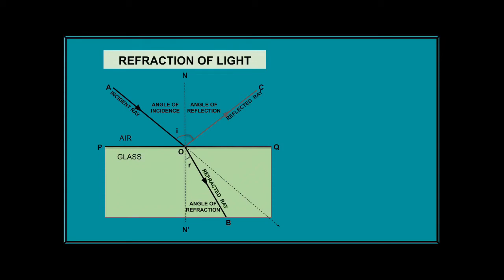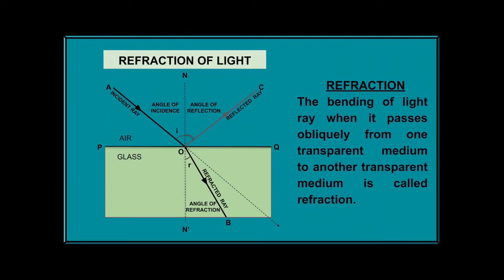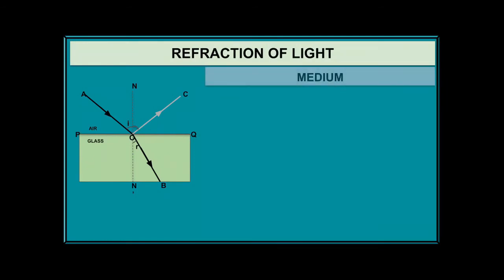So what is refraction? The bending of a light ray when it passes obliquely from one transparent medium to another transparent medium is called refraction. The key word here is obliquely, meaning at an angle. If the light ray comes through the normal line, the angle of incidence is zero — there is no refraction. The angle of incidence must have a value, meaning the light ray must be traveling at an angle.